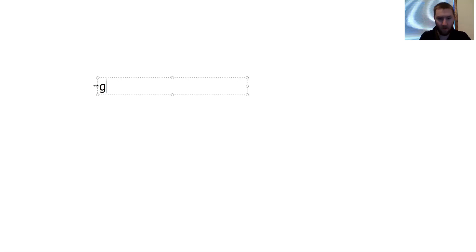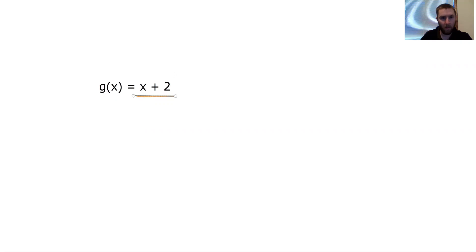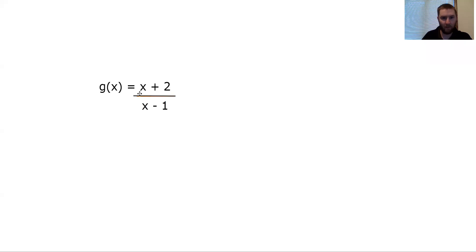Moving on to number 16 — they give us a new function that doesn't look exactly like the type we just saw. It's not just a shifted inverse variation function. They give us G(x) = (x + 2)/(x - 1). This doesn't seem like the type of graph we were just looking at, but it can actually be rewritten in exactly that same form, so we're going to talk about how to do that.